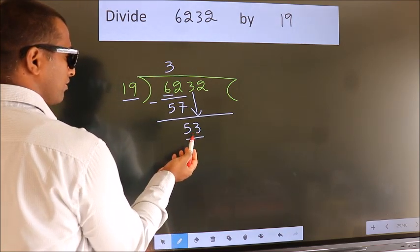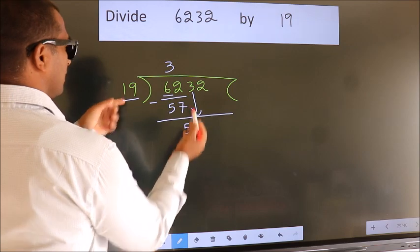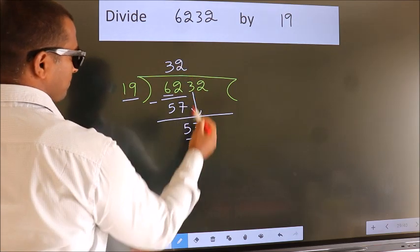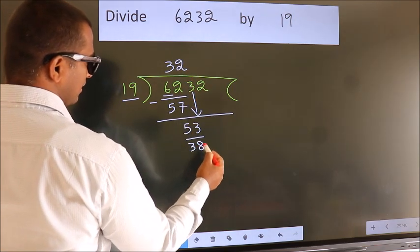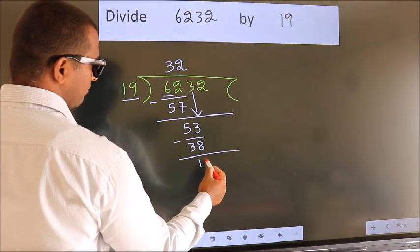A number close to 53 in the 19 table is 19 twos, 38. Now, we subtract. We get 15.